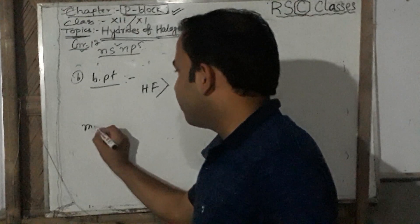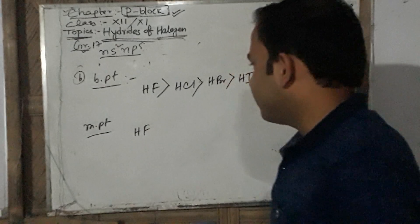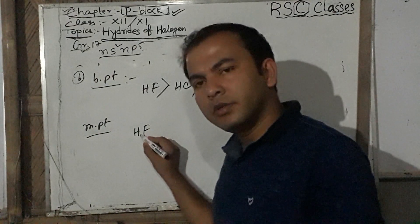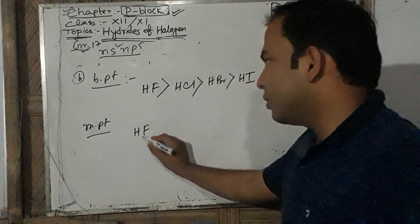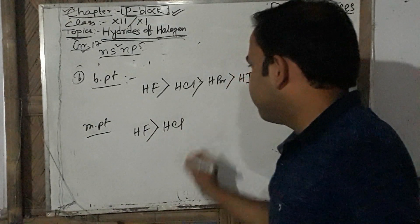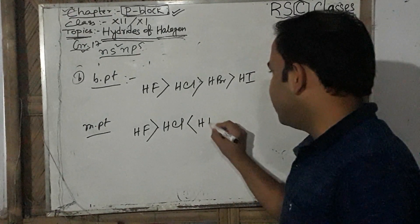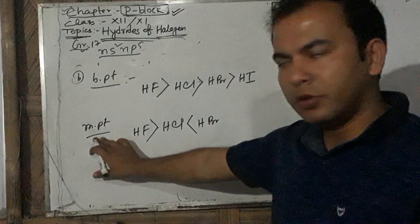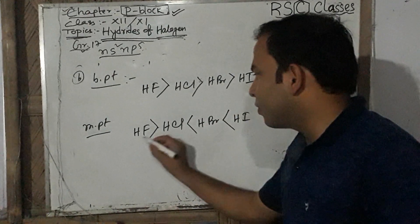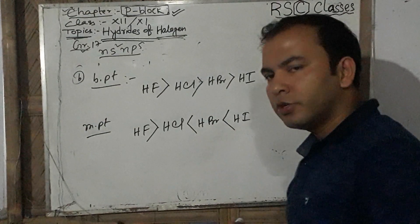For melting points there is an exception. HF has a higher melting point than HCl due to hydrogen bonding. However, from HCl to HBr to HI, the melting point increases regularly due to increasing molecular size. So the order is: HF > HCl, and then HCl < HBr < HI.